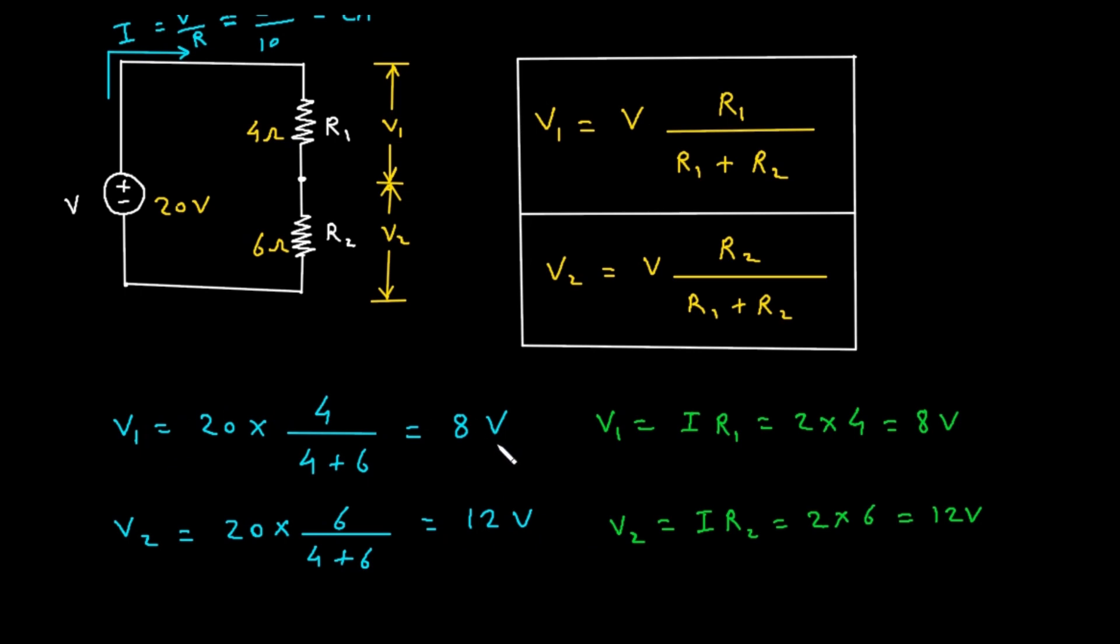For V1, V1 is equal to 8 volt and V2 is equal to 12 volt. That means the voltage across resistor R1 is 8 volt and the voltage across resistor R2 is equal to 12 volt.